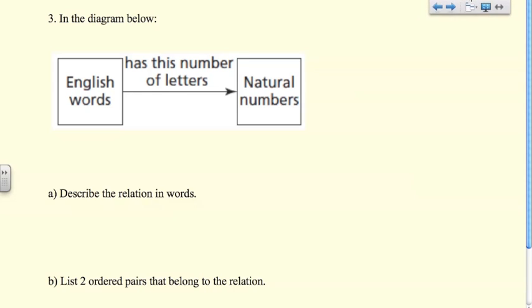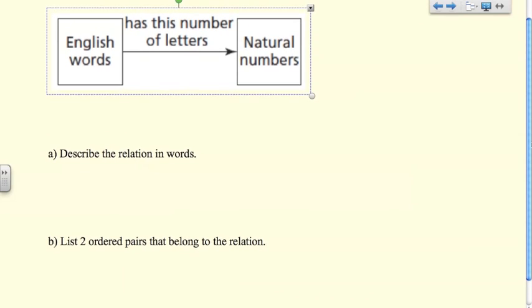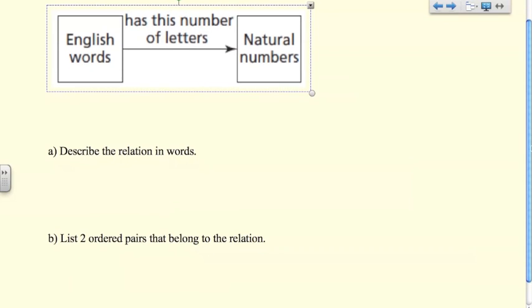Pause the video one more time. You have this in your notes or in your handout as well. Do this one. In this case they've given you a relation but they haven't given you sets of data, so you're going to have to fill those in yourself. The first question asks to describe the relation in words, and the second one is to come up with two ordered pairs that belong to this relation.